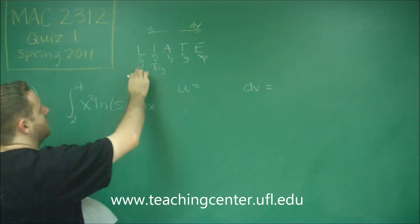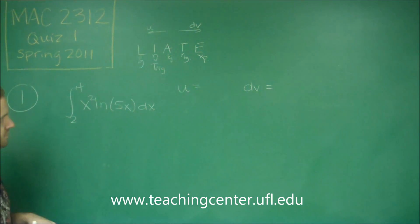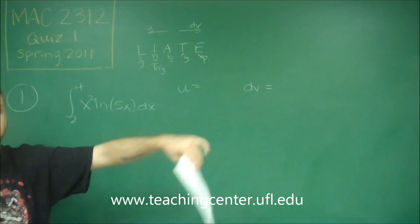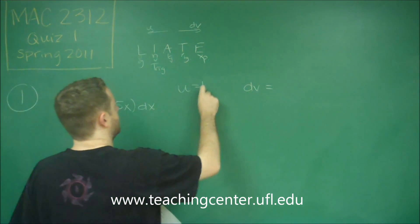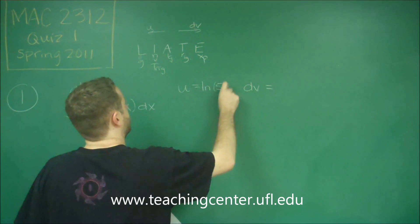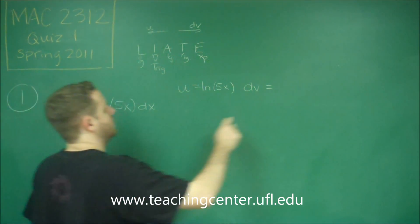In this case, we have a log and an algebraic function. So we definitely want the log to be the U. That's always what you would choose for the U. Then we're going to choose the rest, our algebraic function, to be our dv.